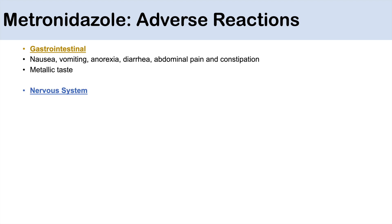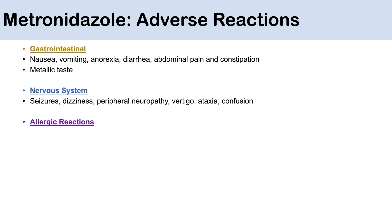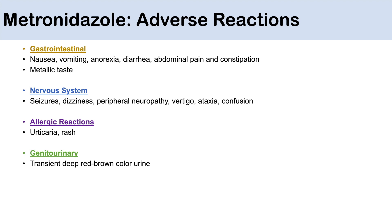Some other adverse reactions include nervous system side effects, which include seizures, dizziness, peripheral neuropathy, vertigo, ataxia, and confusion. There are also allergic reactions including urticaria and rash that can occur. There are genitourinary effects including a transient deep red-brown colored urine, which is just a temporary thing and not particularly concerning.